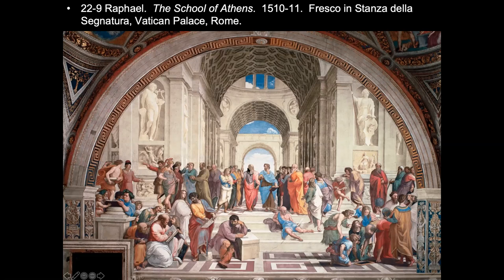The two central figures represent exactly that duality. We have Plato — painted as Leonardo — pointing upwards. The Platonic Academy's thought was that to reach spirituality and get closer to the divine, you should contemplate beauty. Maybe ironic since Leonardo was more of an engineer. On the other side is Aristotle, putting his hand over the earth, representing the sciences and things that are down to earth.